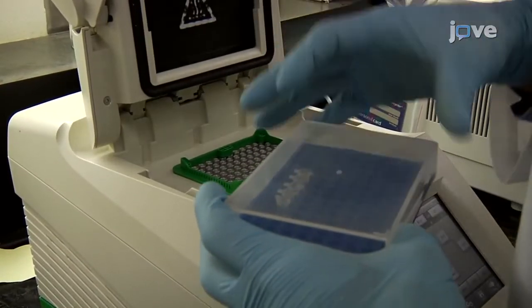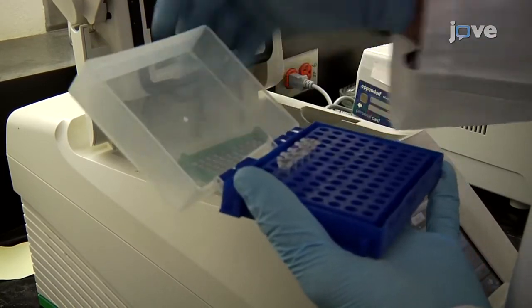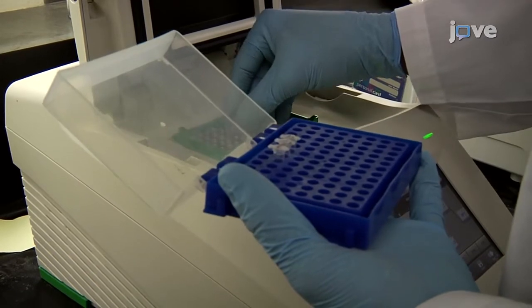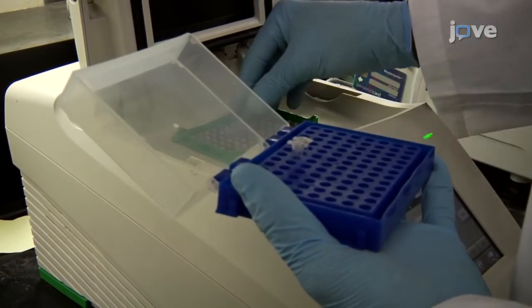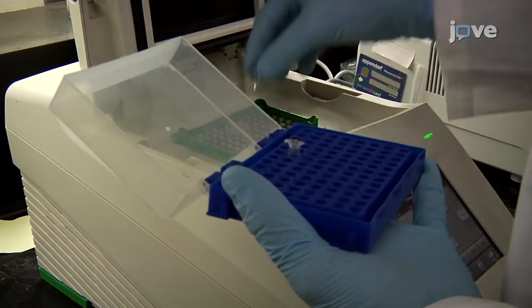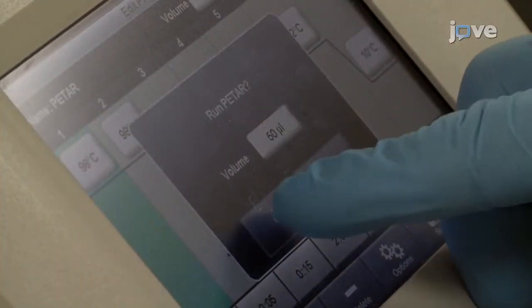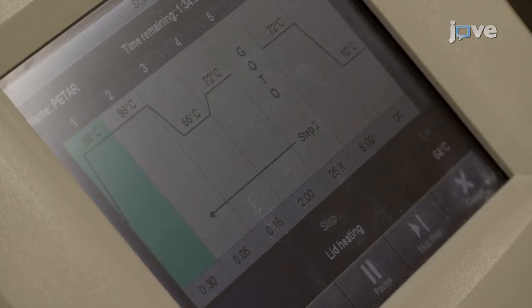Amplify simultaneously, in separate tubes, the DNA fragments of similar size according to the recommendations for the DNA polymerase used. Perform 25 to 28 PCR cycles, or determine the number of cycles that produce sufficient DNA yield.